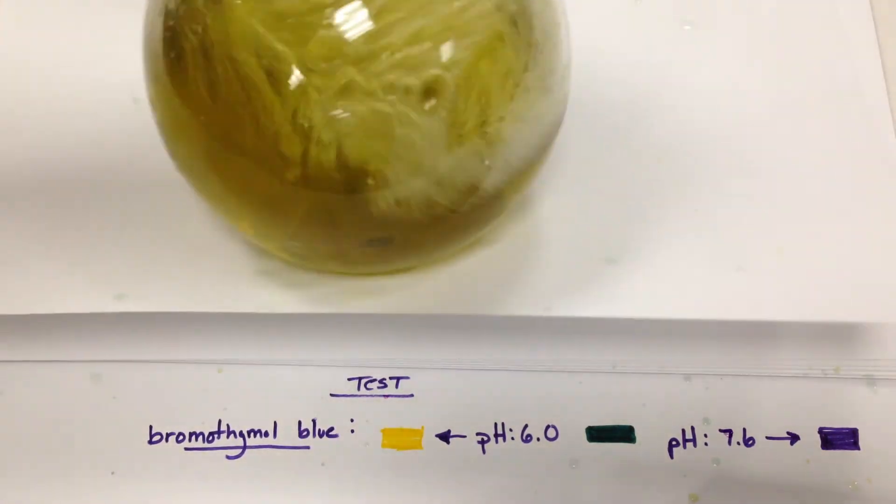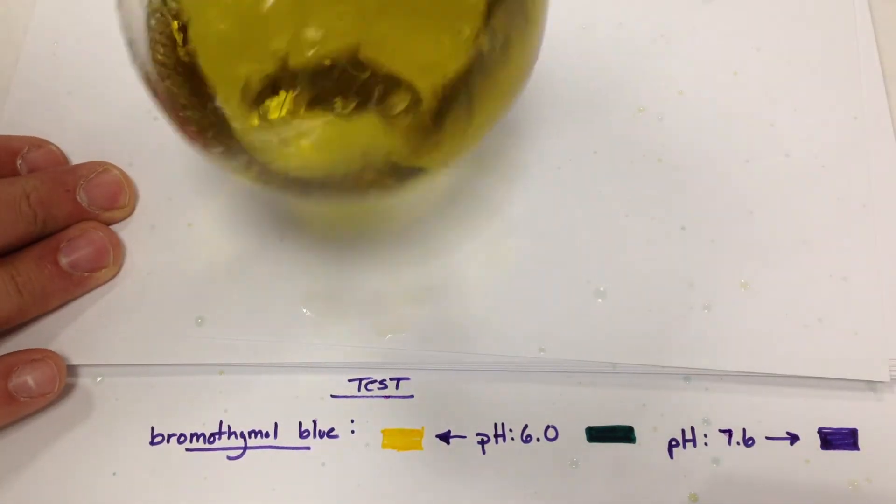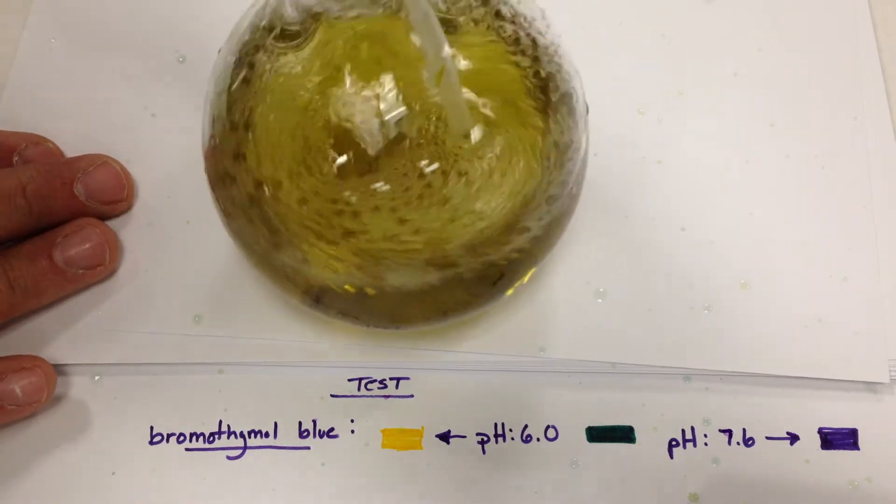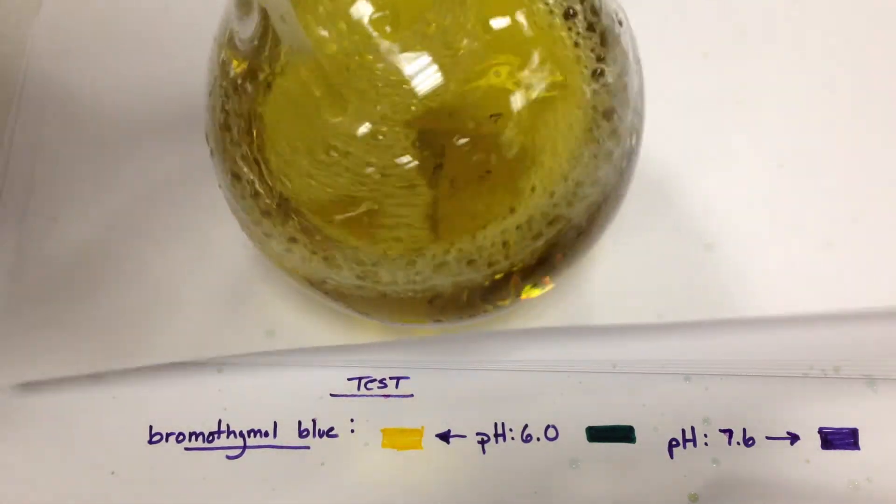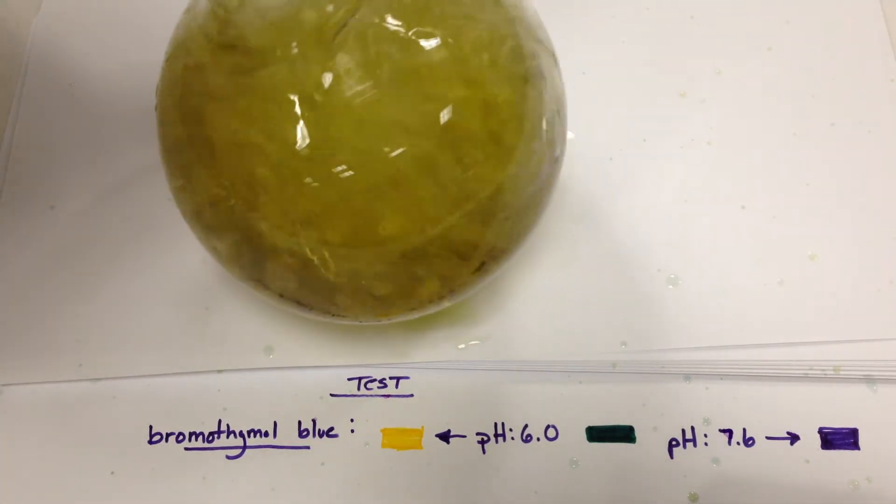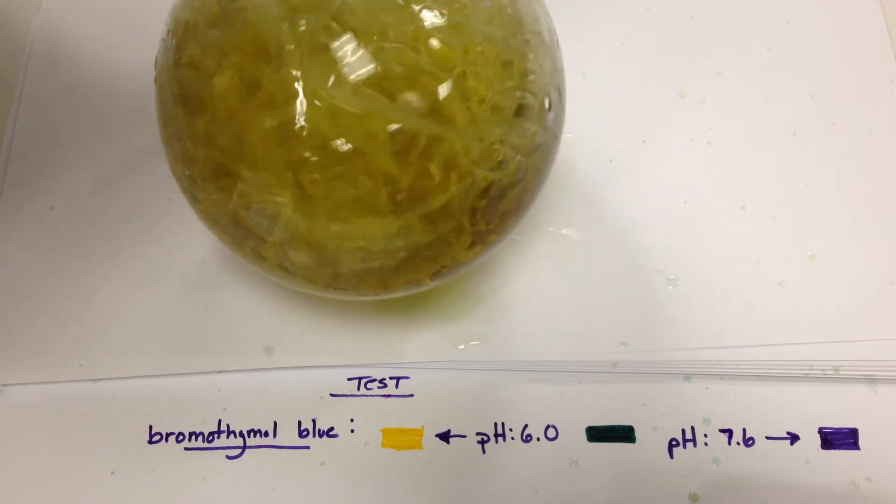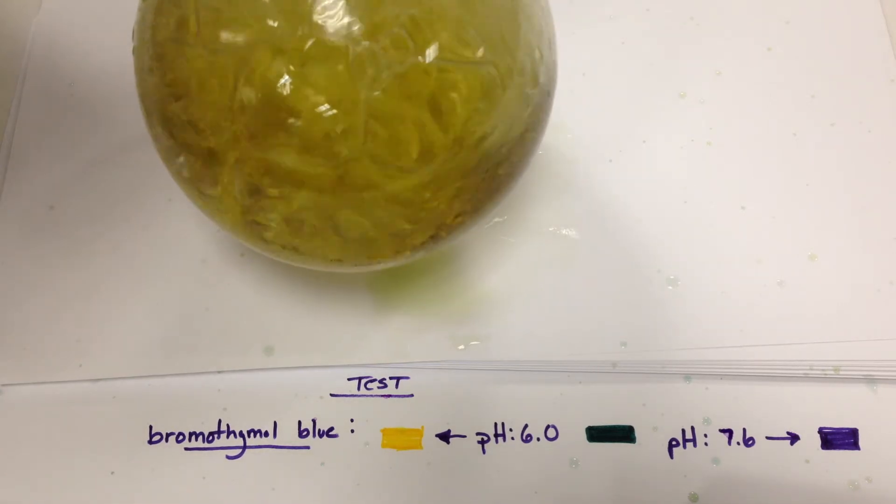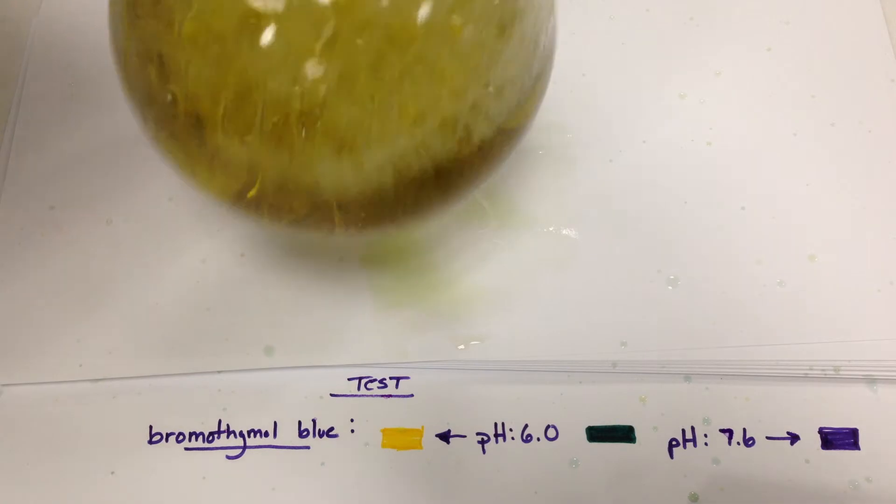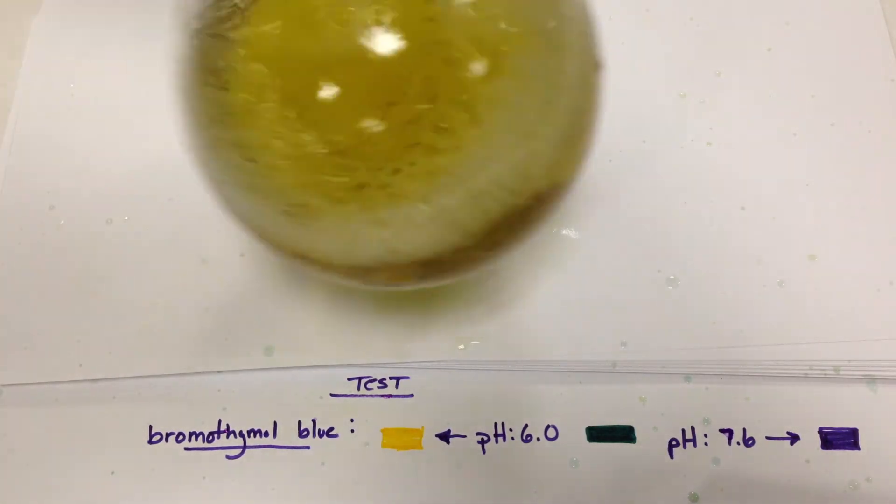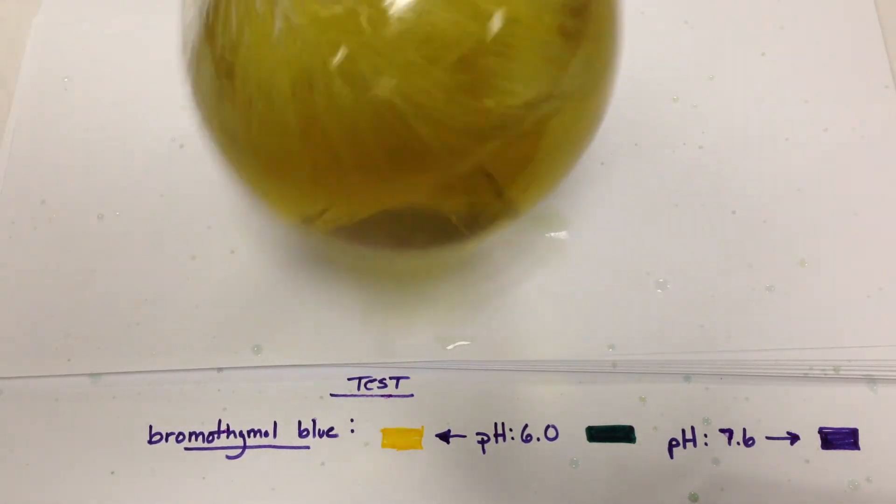And I think that'll do it. That gives me my almost yellow color. It's still a bit green. I'm colorblind, as people would say. So one more.